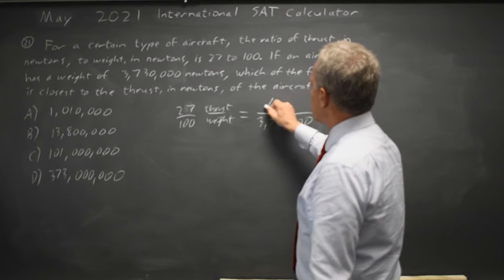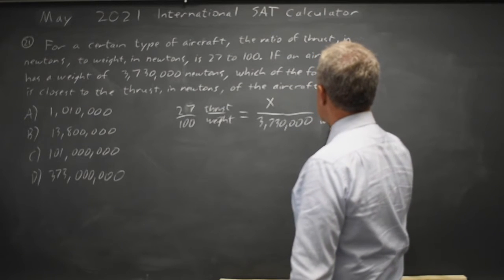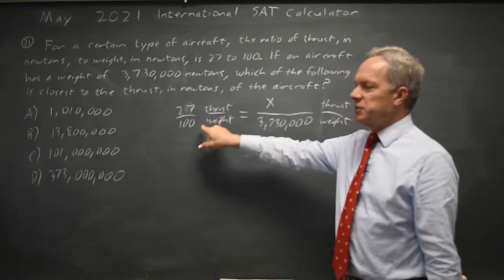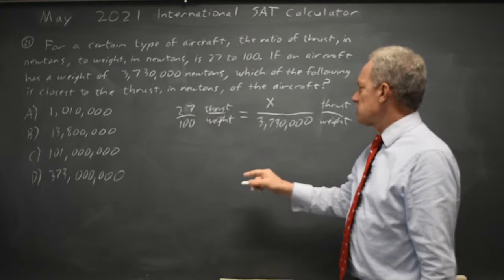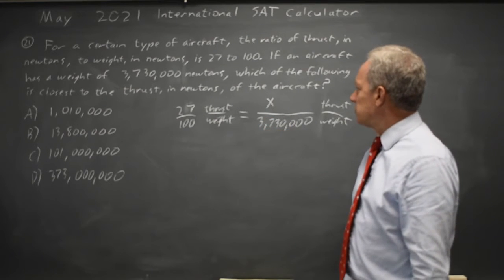We're looking for x, the thrust. So the thrust to weight ratio of 27 to 100 equals the thrust to weight ratio of x over 3.7 million.